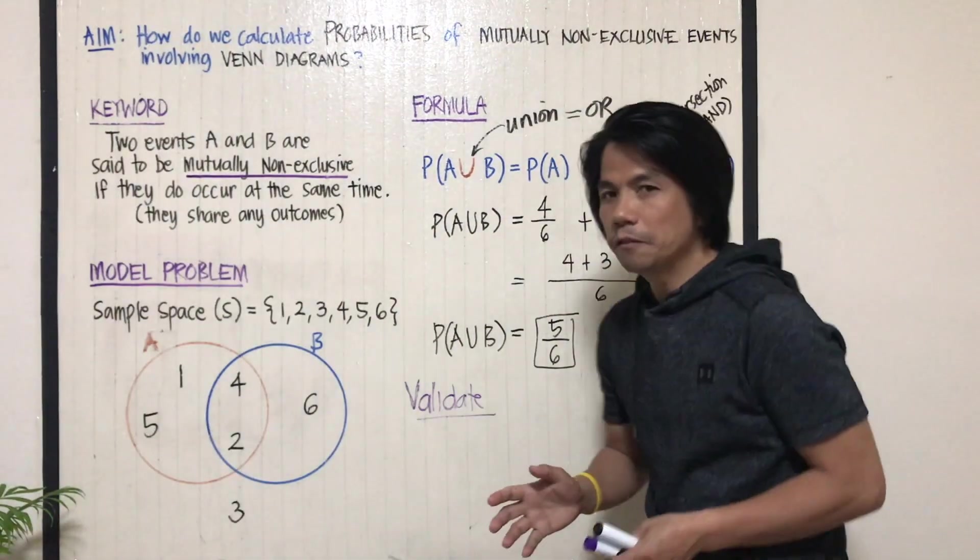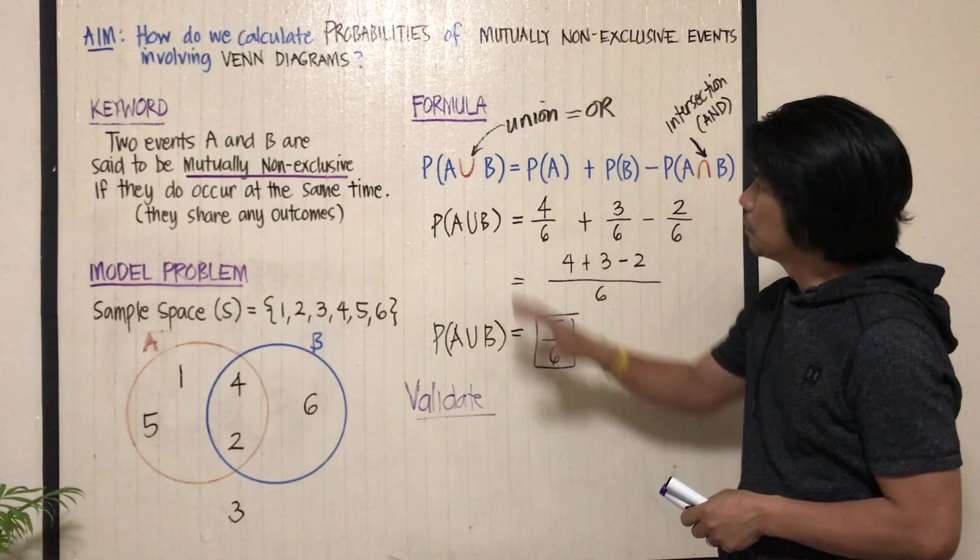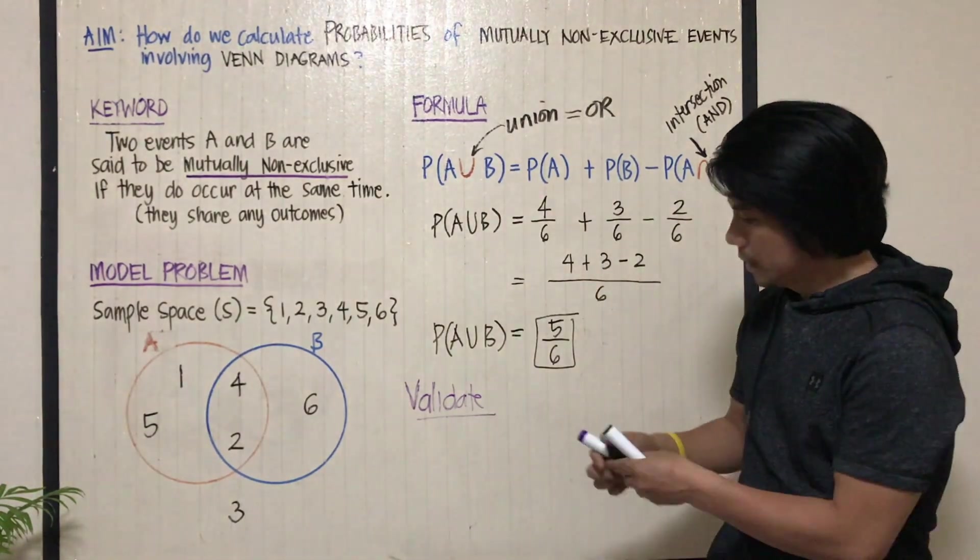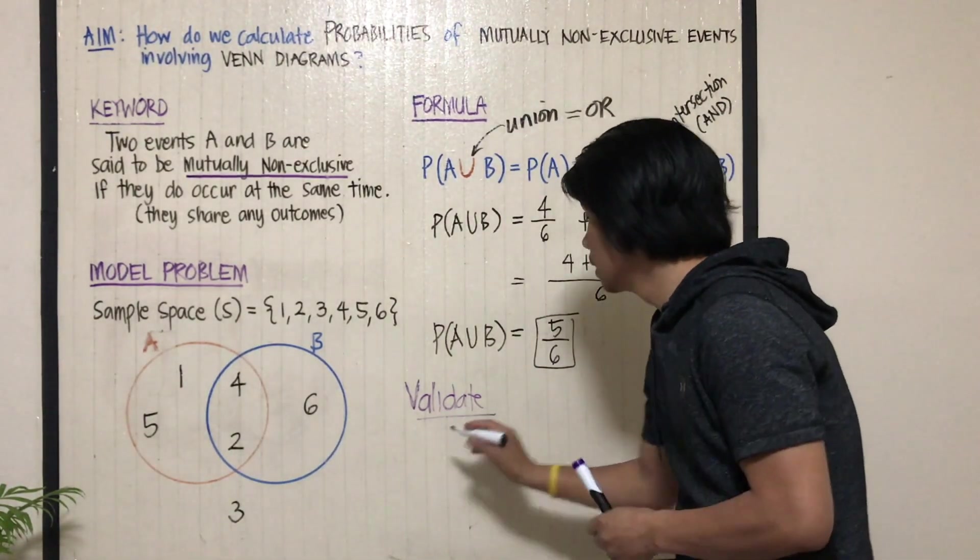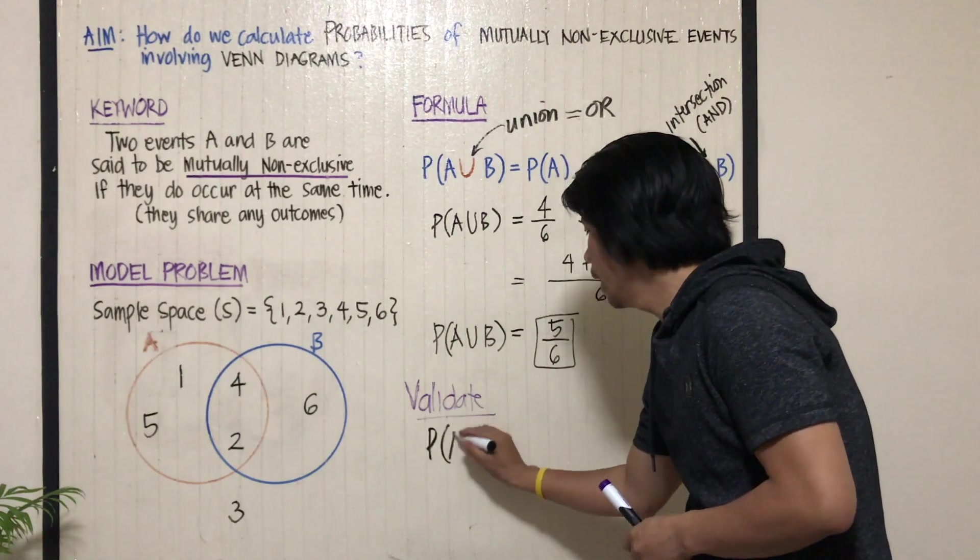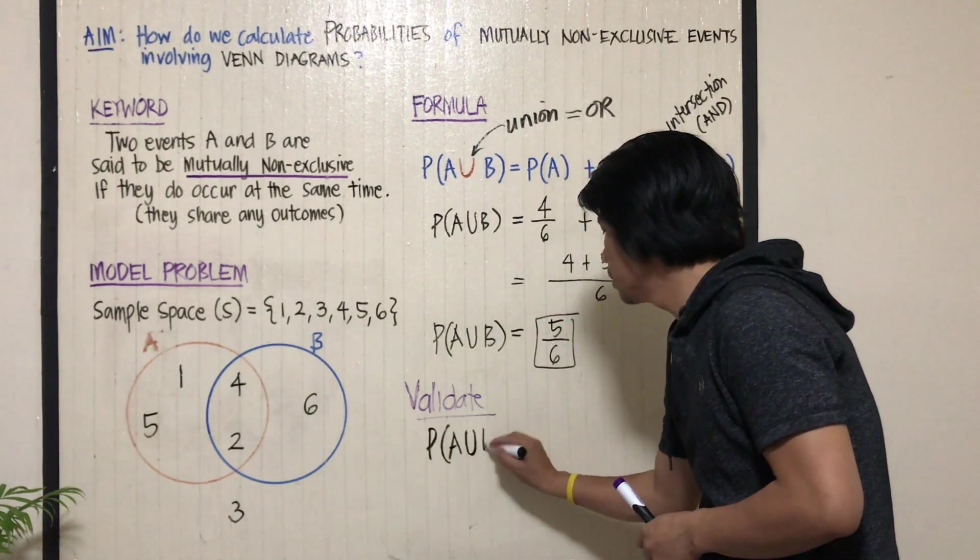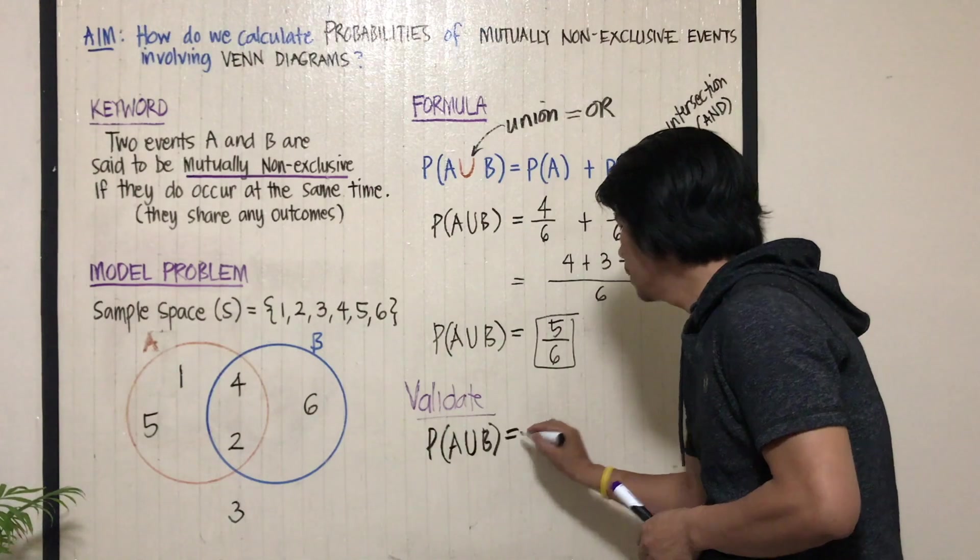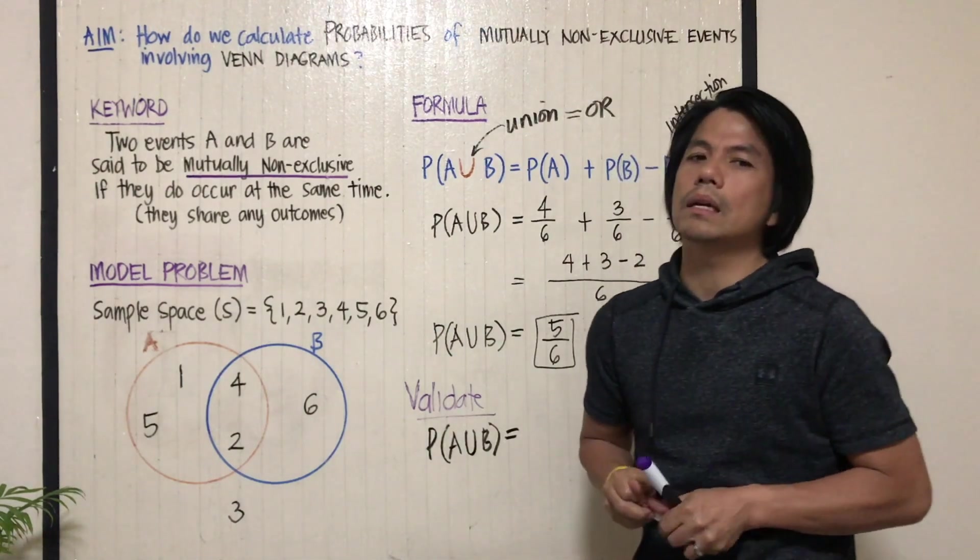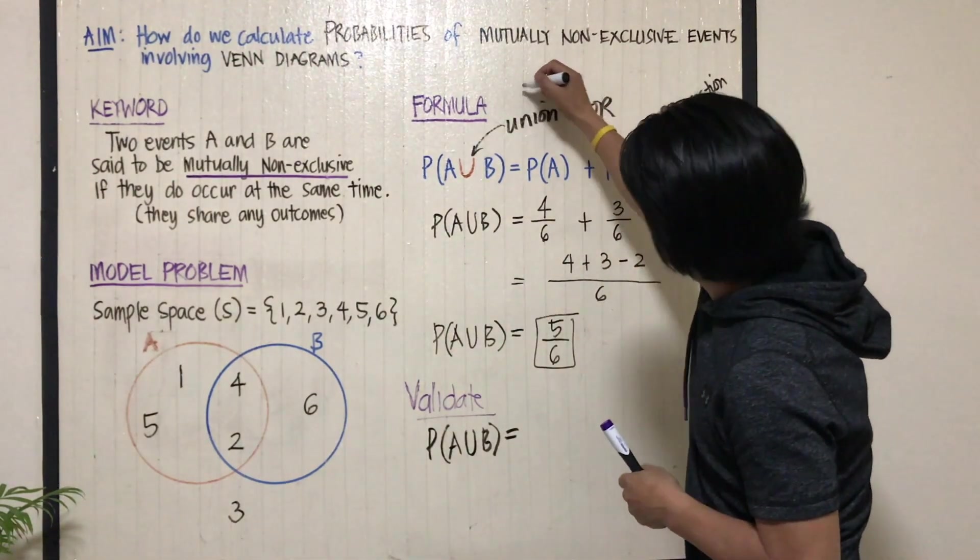How do you validate your answer from the previous work? So again, when you say probability of A and then this symbol union B, obviously when you say union, it's a combination. Let's write it down.